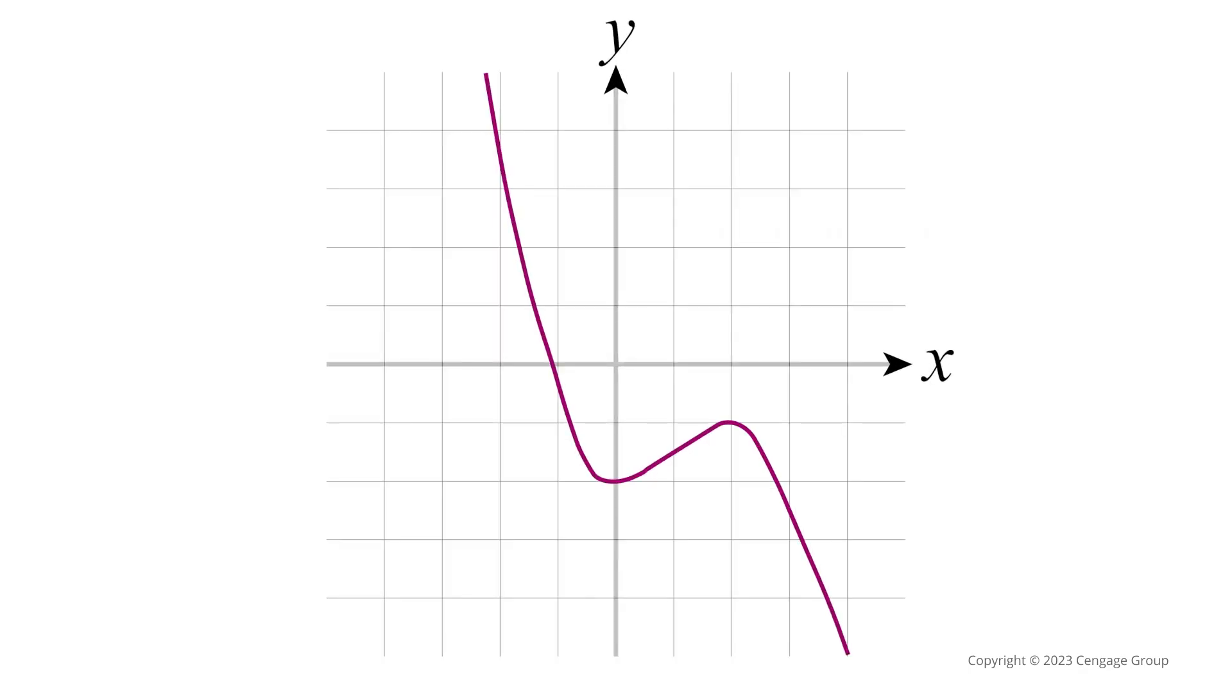Graphically, the real zeros of a polynomial function correspond to the x-intercepts. As we can see on this graph, the x-intercept has a y-coordinate of zero.